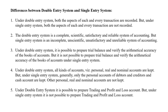In accounting, accounts are classified into three types: personal account, real account and nominal account. Under the double entry system, all three types are maintained. But in the single entry system, only a few accounts are maintained — that is, the personal accounts of debtors, creditors and cash accounts.